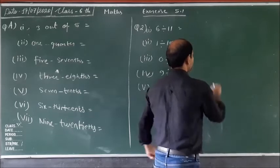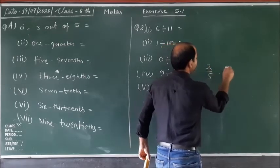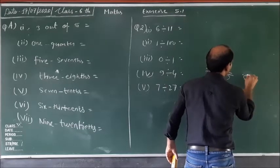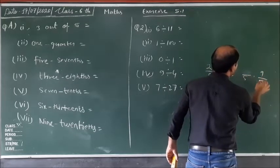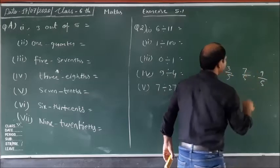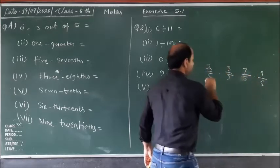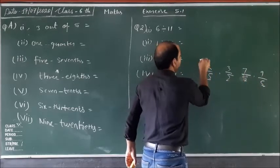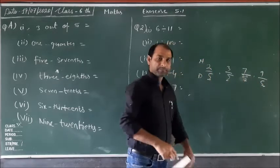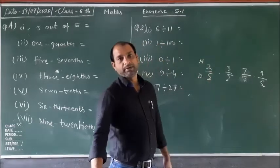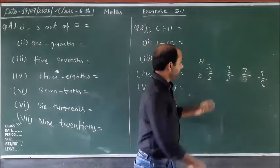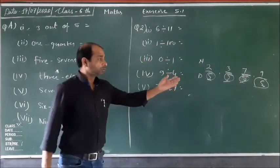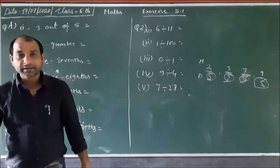For example: 2 upon 5, 3 upon 5, 7 upon 5, and 9 upon 5. Look here — this is the denominator and this is the numerator. All these denominators are equal, the same. So these are like fractions.